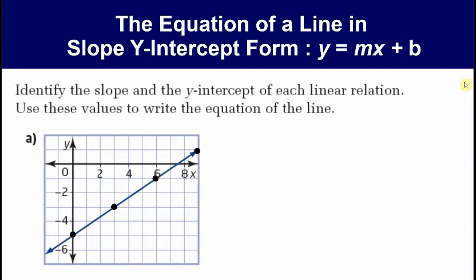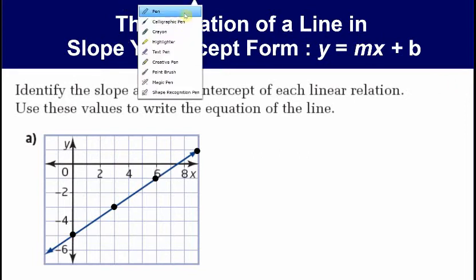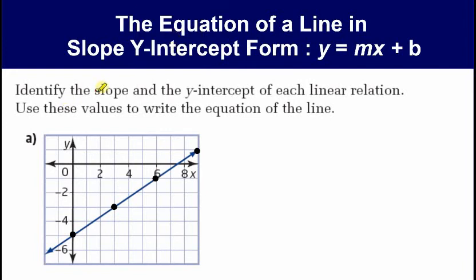Our first example says: identify the slope and y-intercept of each linear relation, then use these values to write the equation of the line. We're shown a graph with a linear relation and some clearly identified ordered pairs marked with black dots. In this question we have three tasks: identify the slope, identify the y-intercept, and use them to write the equation.